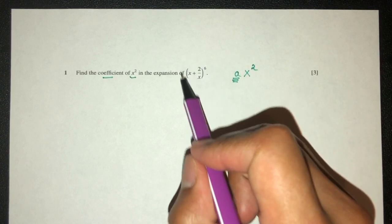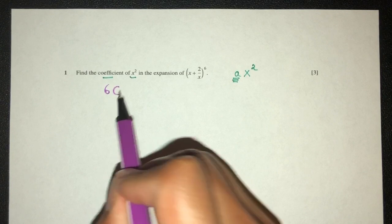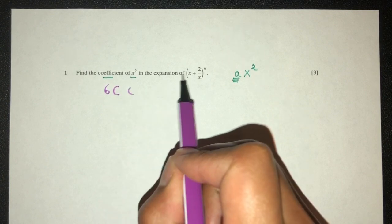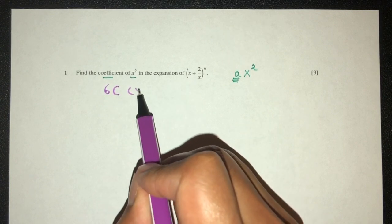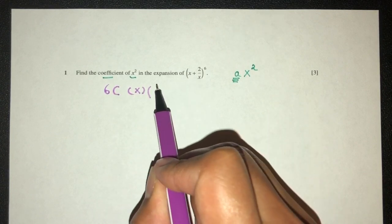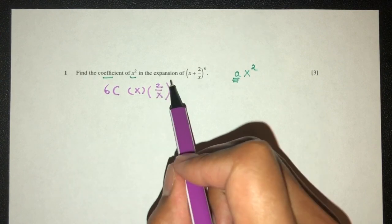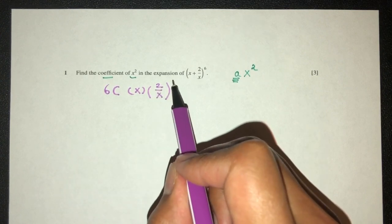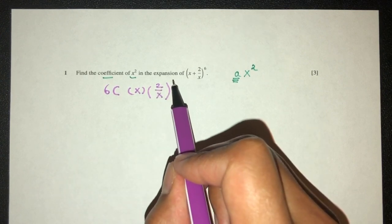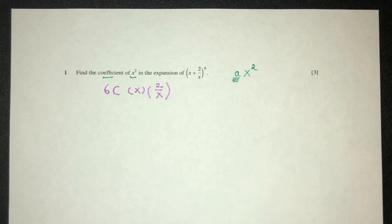If you were to expand this, you will do 6 choose something — the first term is x, and then here we have plus 2 of x. Now we have to choose the power here. So what power can I choose so that I can have x squared as my term?